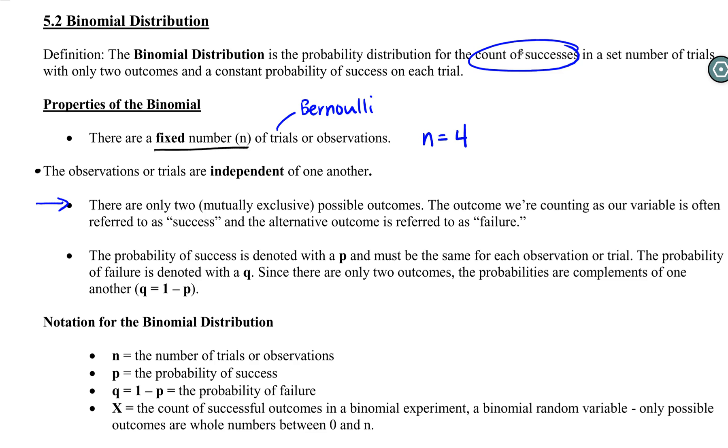Binomial is how many successes do we have? If you've taken a stats class before or know anything about probability, you may have seen what we call a hyper geometric distribution, which is where we say what's the number of trials before we reach our first success. So there's a lot of different ways that we look at these sort of Bernoulli trials. But binomial is counting up our number of successes.